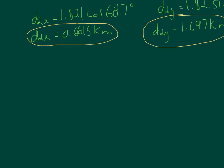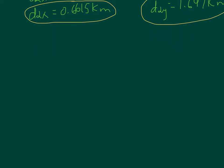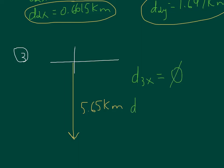And we only have one vector left, which is the third one. Now this one actually is going to be a little bit easier because it is a vertical vector, 5.65 kilometers straight down. Which means it really does not have an x component. It's a 0. So we didn't have to do any work. And D3y will be 5.65 kilometers. But because this is pointing down, we have to put the proper sign, which will be negative. So there is our D3x and our D3y.